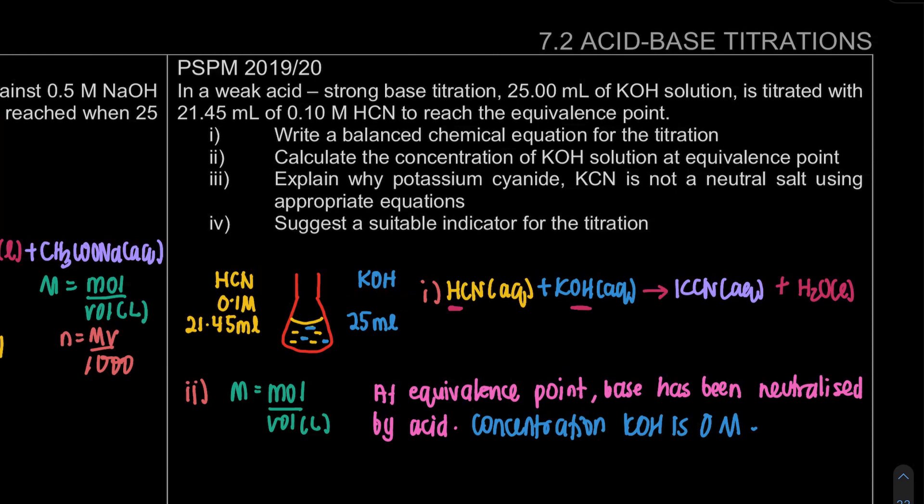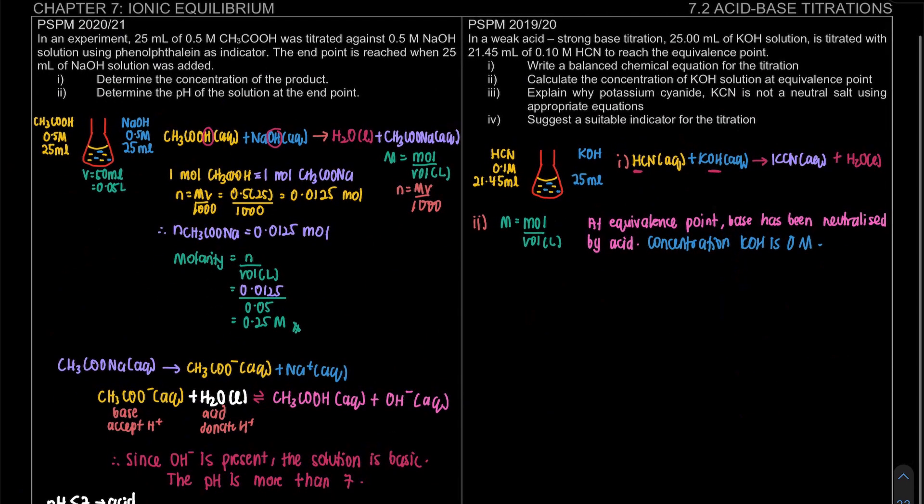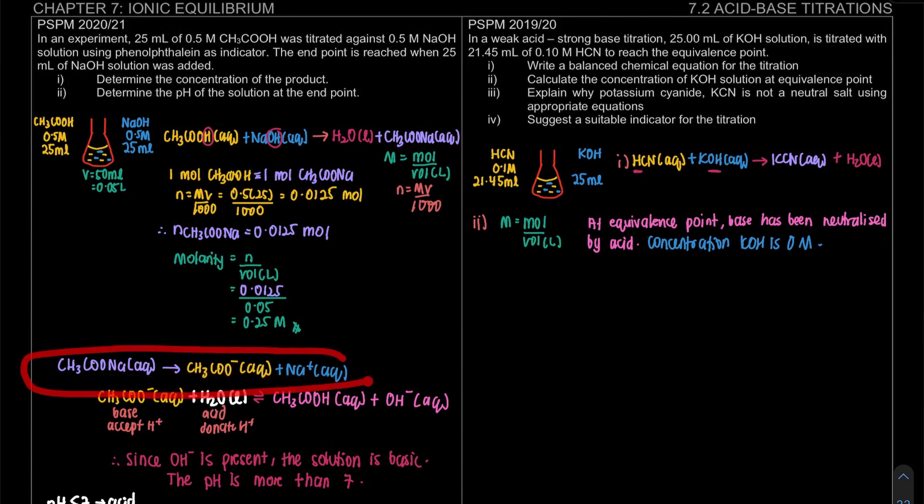Number three. Explain why potassium cyanide is not a neutral salt using appropriate equation. Again, this one will be about our salt hydrolysis. Salt hydrolysis. First, if the question is regarding salt, we have to dissociate the salt into its respective ions.